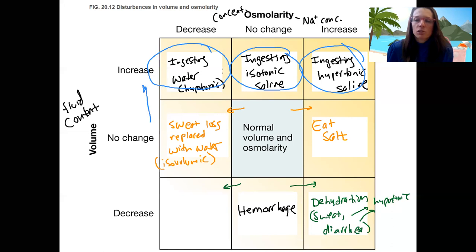Sweat is actually slightly less than 300 milliosmols. Looking it up, it's 120 milliosmols. So when you sweat, you are losing more fluid than you are salts because your plasma is 300 milliosmols. That's a hypotonic solution that you're excreting.